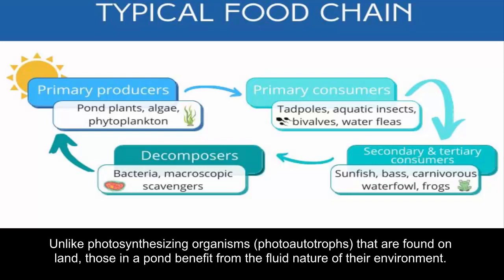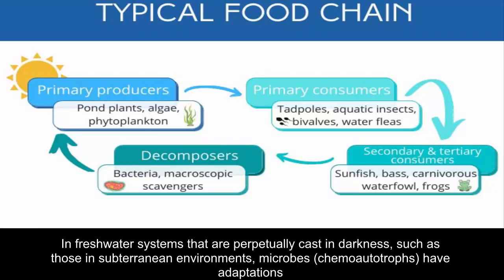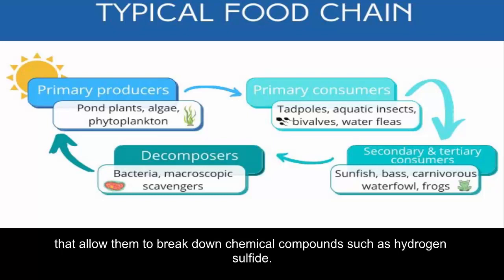Unlike photosynthesizing organisms — photoautotrophs found on land — those in a pond benefit from the fluid nature of their environment. Instead of having to tap into a network of nutrients found in the ground, they have adaptations that mediate nutrient sequestration from the surrounding water. In freshwater systems that are perpetually cast in darkness, such as those in subterranean environments, microbes called chemoautotrophs have adaptations that allow them to break down chemical compounds such as hydrogen sulfide.